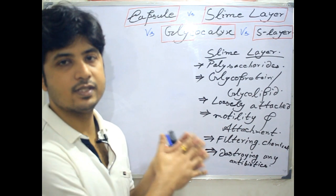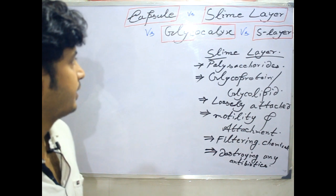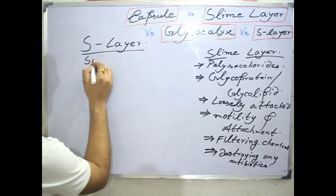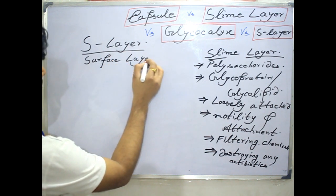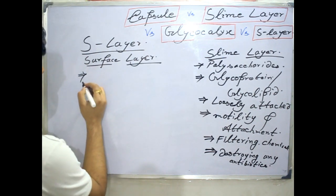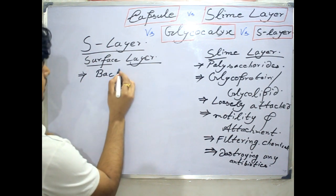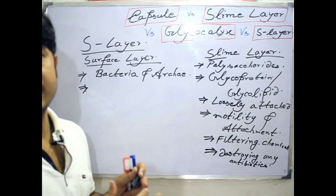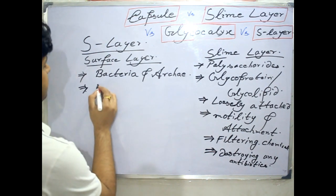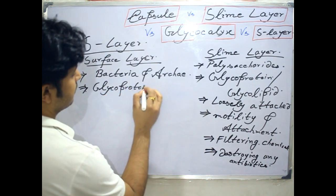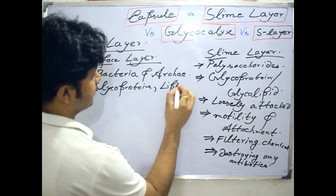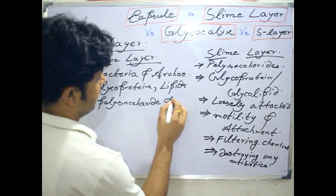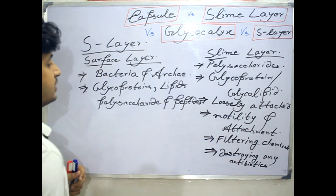The S layer is totally different from these substances. It is also called the surface layer. Surface layer is very important in both bacteria and archaea. This S layer or surface layer is composed of glycoproteins, lipids, polysaccharides, and peptides. This is the composition of the surface layer.